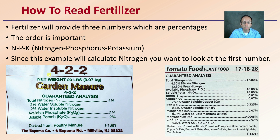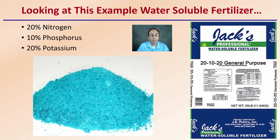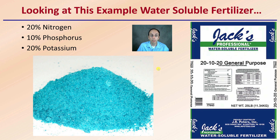On this one it's 4% nitrogen and this one 17%. Looking at this example, we're going to use a standard JAX water-soluble fertilizer: 20% nitrogen, 10% phosphorus, 20% potassium. We're going to focus on that first number because we're calculating nitrogen. If we were actually fertilizing we can't forget about those other numbers, but for the purposes of this calculation we're going to focus on the 20% nitrogen.